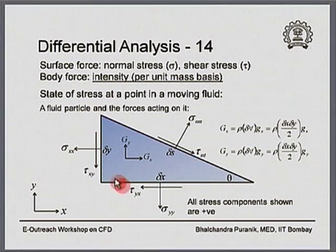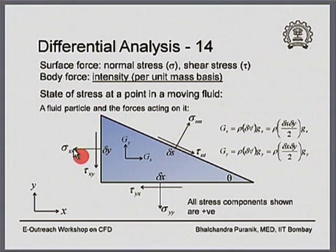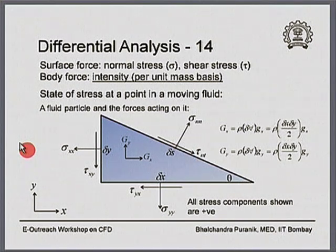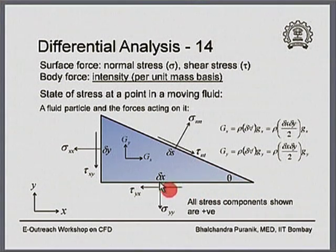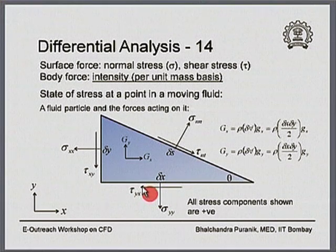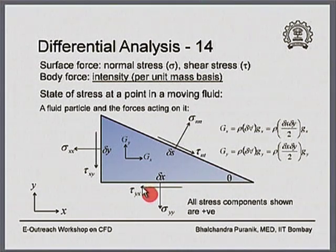Going back to see why each stress component is positive: on the vertical face, the normal stress component points in the negative x-direction, and its surface normal also points in the negative x-direction. Both point in the same coordinate direction, so sigma_xx is positive. For the shear stress on the bottom surface, the outward unit normal points in the minus y-direction and the shear stress points in the minus x-direction — both in minus coordinate directions — making it a positive stress component.